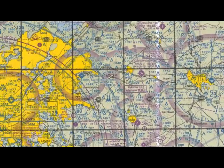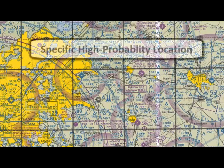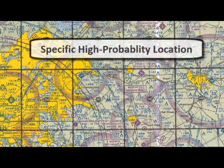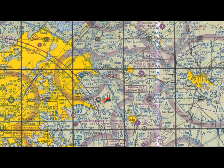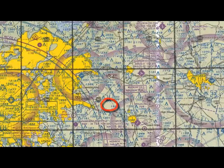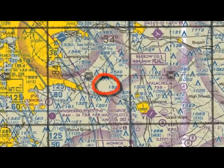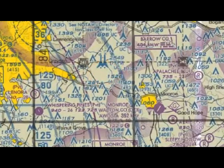Typically, a sector search is utilized when information points to a specific location that has a high probability to be near a crash site. For example, a concerned citizen calls in during the night saying they heard a low-flying aircraft in the general area of a suspected downed aircraft. That caller's home address lat-long coordinates could then be used as the center point of the sector search.